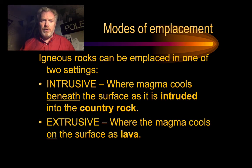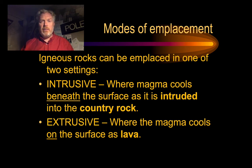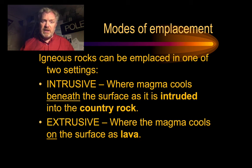The second mode of emplacement is extrusive igneous rocks. This is where the magma cools on the surface — this would be the products of volcanic eruptions like lava, for example. In this video, I want us to focus particularly on the intrusive igneous rocks.